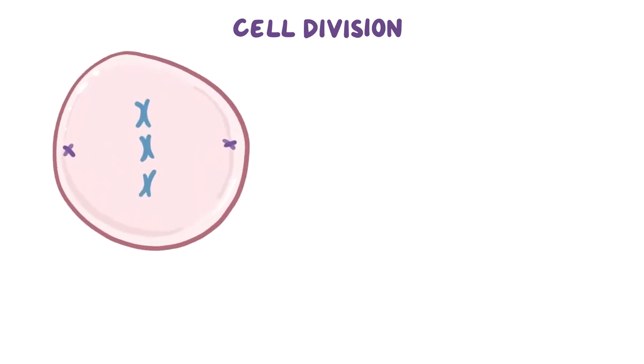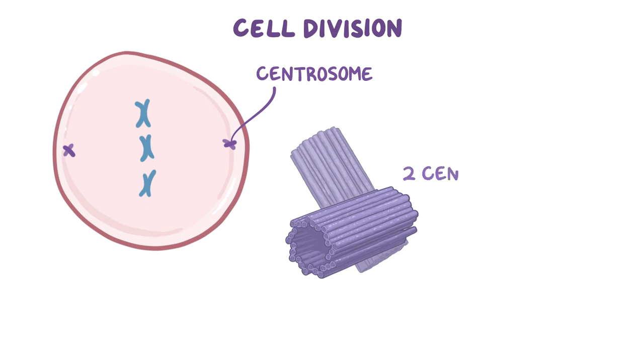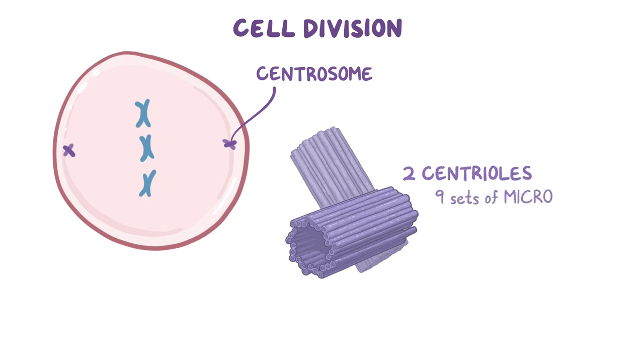Microtubules play a super important role in cell division. During cell division, there are two centrosomes inside the cell, and each centrosome is made out of two centrioles. Each centriole is in turn made up of nine sets of microtubule triplets.